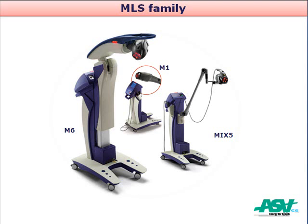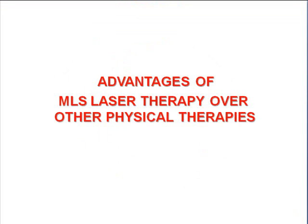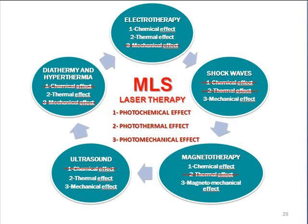The MLS family includes the M1, which is a traditional hand probe; the Mix 5, which is a fixed-point delivery system that is semi-automatic; and the robotic M6. The advantages of MLS therapy over other physical therapies include a photochemical, photothermal, and photomechanical effect all at once with the laser, where other therapies may have one to two but not all three. Therefore, the laser can actually replace electrotherapy, shockwaves, magnetotherapy, ultrasound, and diathermy while providing the absolute optimum healing modalities to help the body heal.